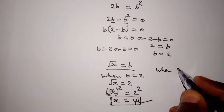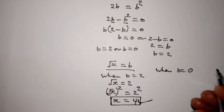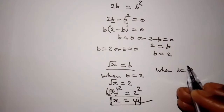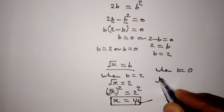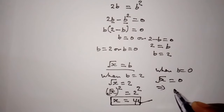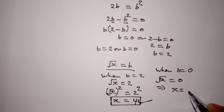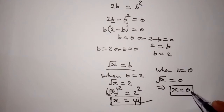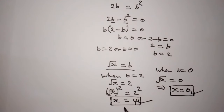When b is equal to 0, then square root of x is equal to 0, which implies that x is equal to 0. So our second value of x is 0, and our first value of x is 4.